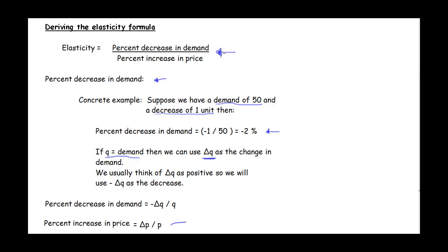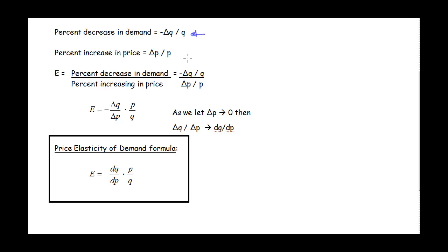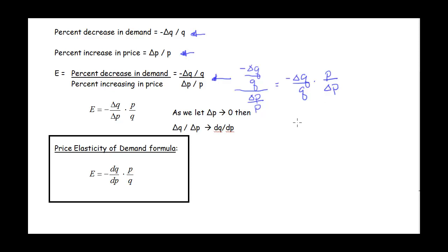Next let's actually build this formula. We have our expressions for the percent decrease in demand and the percent increase in price. Elasticity is the ratio of those two, so if we divide them we get a compound fraction. We invert and multiply, which gives us P over delta P. Putting those together, we get negative delta Q over delta P times P over Q.